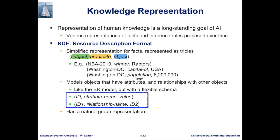One such representation is relational databases, which we know from the first part of this course. Another type is RDF, or Resource Description Format. In this format, we use a triple to represent information or a fact, using subject, predicate, and object. For example, to say the winner of NBA 2019 is the Raptors: the triple is 'NBA 2019 - winner - Raptors'. To say the capital of the USA is Washington DC: the triple is 'Washington DC - capital of - USA'.